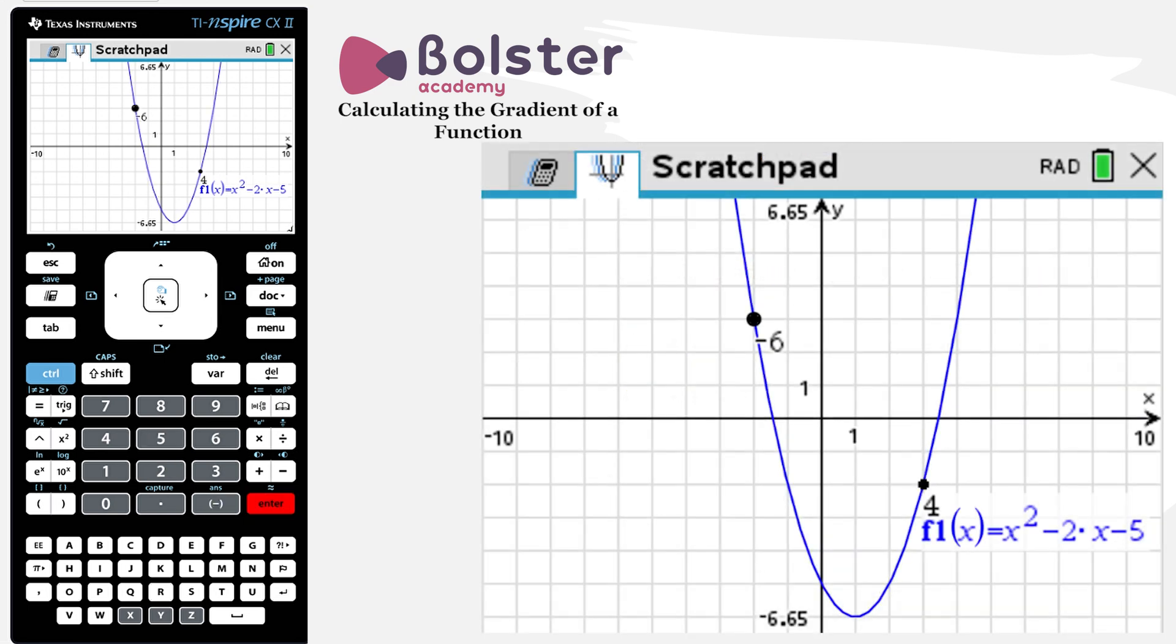Hit Enter. And there's the point where x is equal to minus 2 on the graph. The gradient at this point is minus 6. So we can find the gradient at any point on any curve using this function on our calculator.